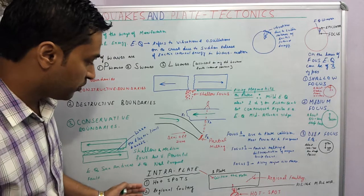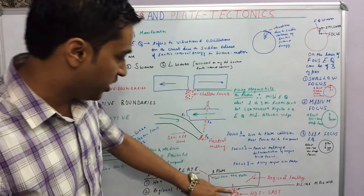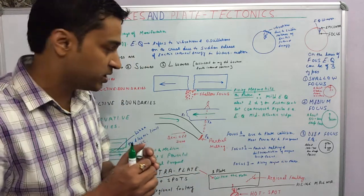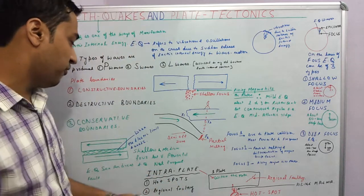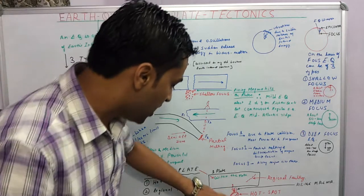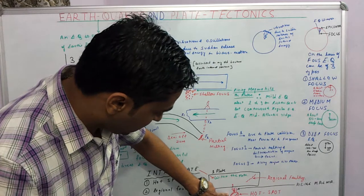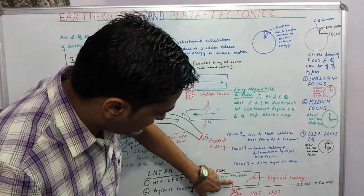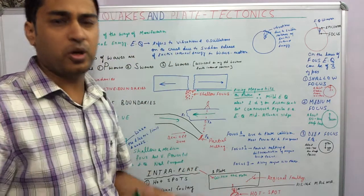Now we will come to something called intraplate earthquakes. These are the kind of earthquakes where the earthquakes occur within the plate. There are no two plates interacting. Here the earthquakes can occur because of examples like hot spots or regional faulting. Now here we can see in the diagram that there is a certain hot spot in the mantle and magma is coming out, and on account of this, earthquake is caused on the plate above. Earthquakes in this context can also be caused due to some regional or local faulting.